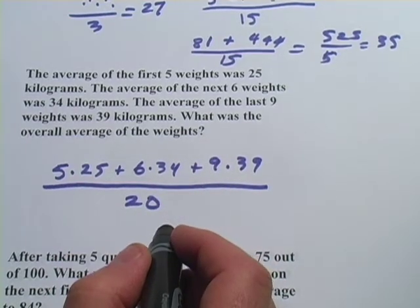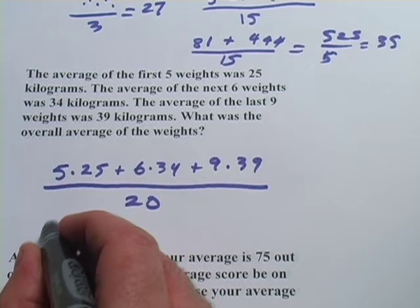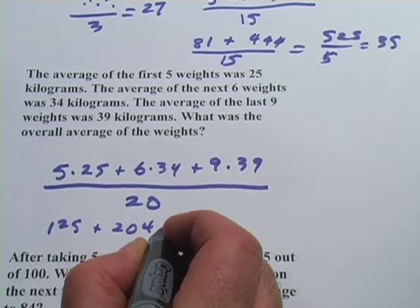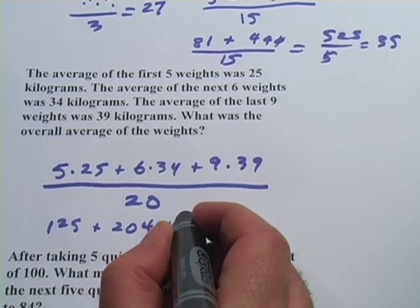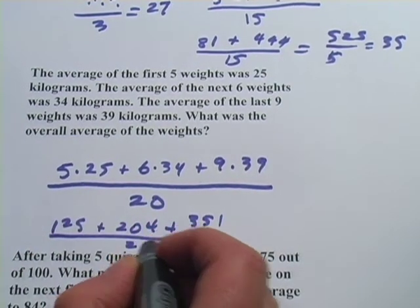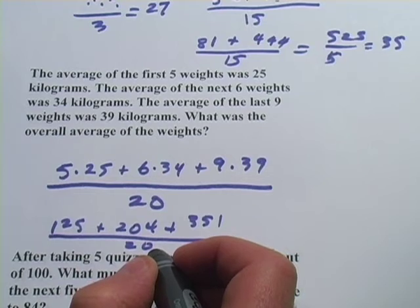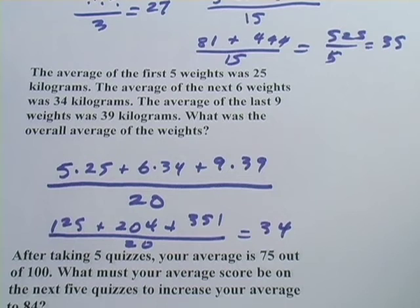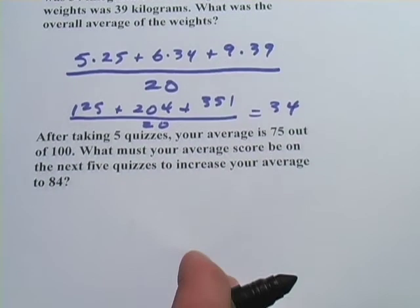And then you would just crunch the numbers there. So that is 125 plus 204 plus 351, all divided by 20, and I believe that will come out to 34. You might want to check my work on your own calculator. All right, one more.